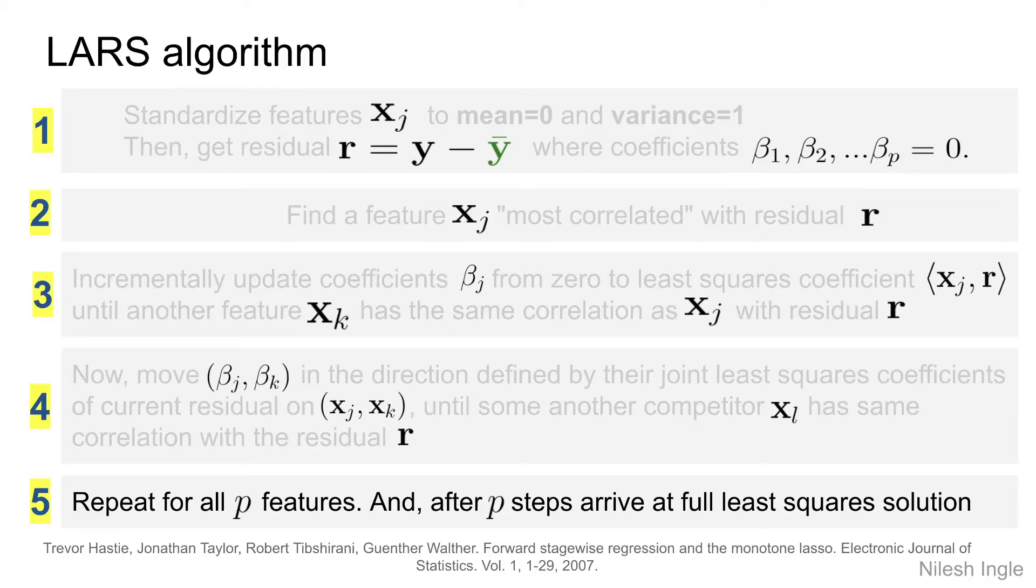We continue this until we reach the full least squares solution. Just to reiterate: we start with standardizing the dataset with mean of zero, variance of one, and we find the very first residual r, which is just based on the intercept—all coefficients are zero. Then we find just one feature, and thus we'll have just one coefficient to work with. We use that coefficient for that feature to predict some values and find the residual. Each time we do that in incremental steps, there will be a point where other features would have the same correlation with the current residual.